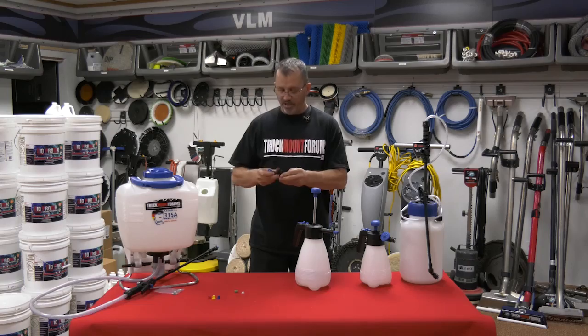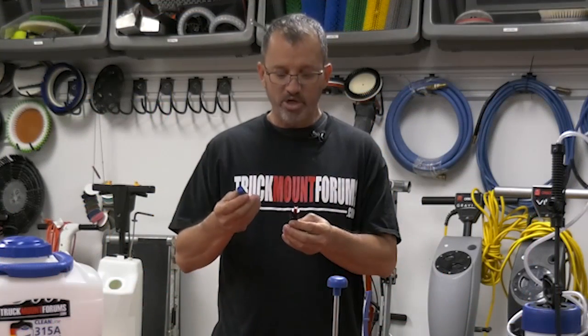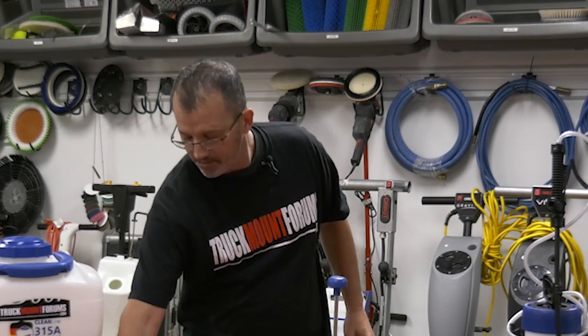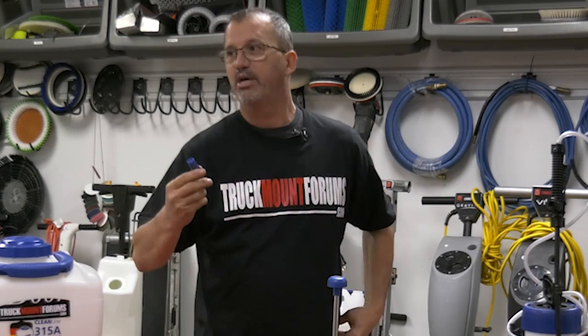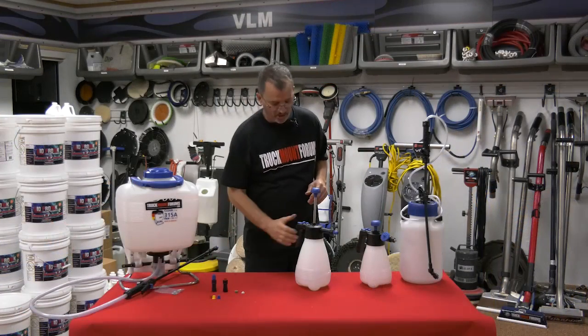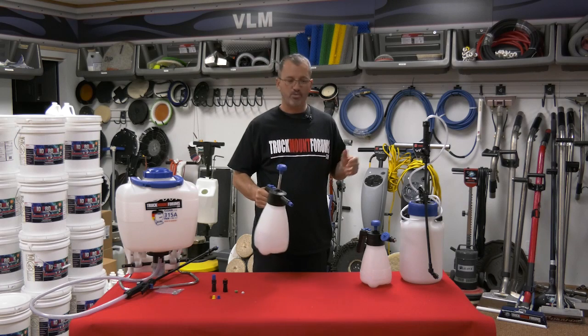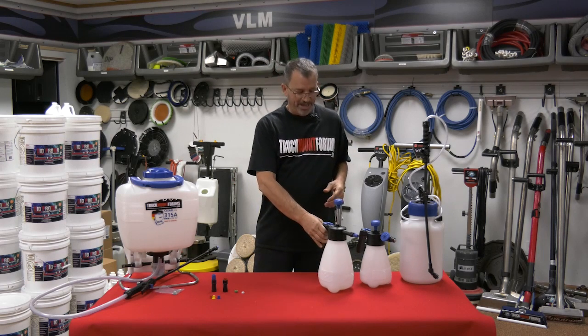Remember there's different tips that are available also. You can get the cone and just about any basic T-jet will fit, but remember it comes with a cone tip, which is what I mostly use. I kind of like using it for deodorizers, especially for upholstery. I love using it for upholstery. It's just handy, easy to use, and maybe some light deodorization throughout a home or a room or that nature.